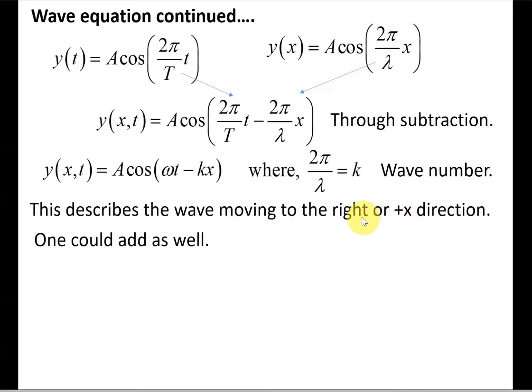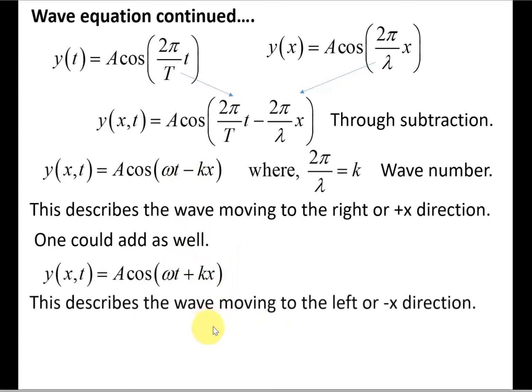We can get a left-moving equation, or the equation that's moving to the negative x direction, by adding these two terms in the parenthesis. In other words, we can replace this negative sign by a positive sign. Now this describes the wave moving to the left or negative x direction.